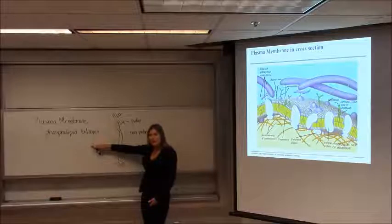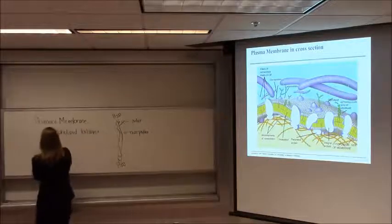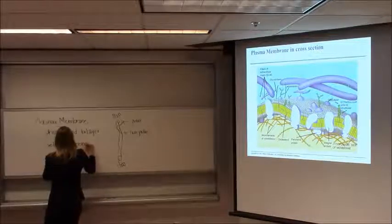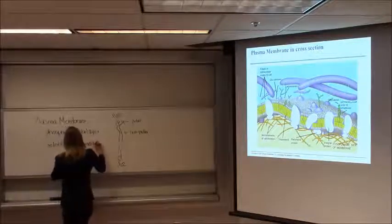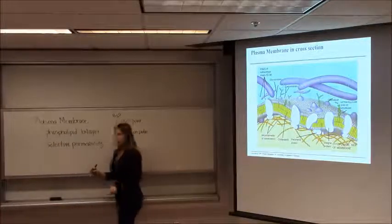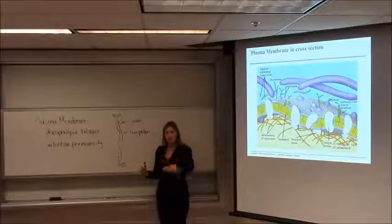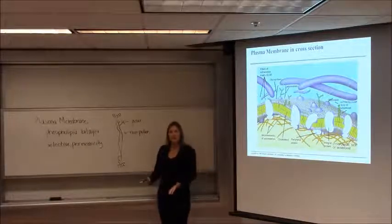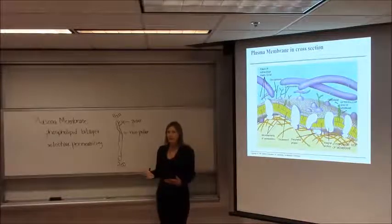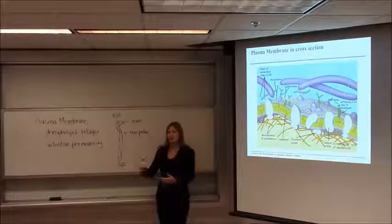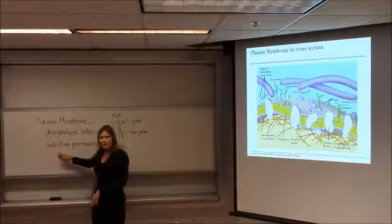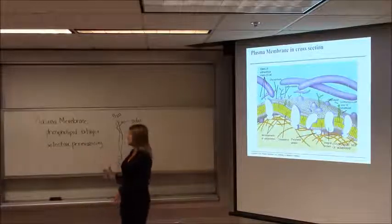Another very important term to understand is selective permeability. If something is permeable, it means materials can just move in and out. If something is selectively permeable, it means we select what moves in and out — we don't let just anything move into or out of the cell. We're going to regulate that.